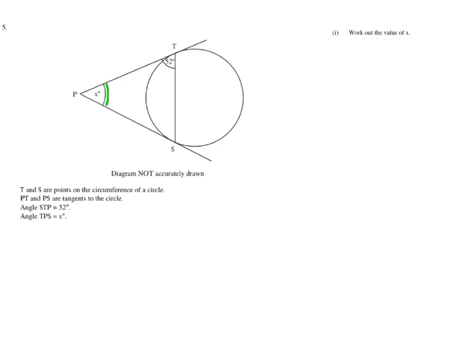Now, one of the circle theorems tells us that if we have two tangents, just as we do here, they form an isosceles triangle. So it's clear that this angle here will be 52 degrees, because that's the same as this angle here. And of course, the angles in a triangle add up to 180 degrees.